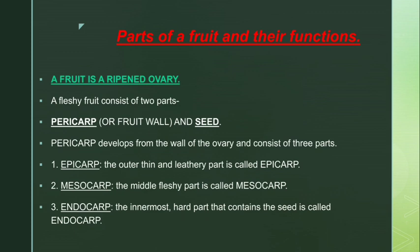A fleshy fruit consists of two parts: pericarp and seed. The pericarp is the outer covering of the fruit, and inside the fruit we usually find a seed. That is the second part of the fruit.